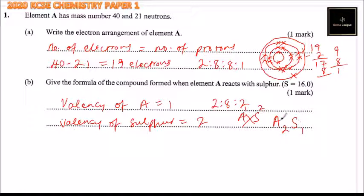That is, we have two atoms of A combined with one atom of sulfur to form a compound which we write like that. So that's the compound which element A will form with sulfur, and that is how we answer that question.